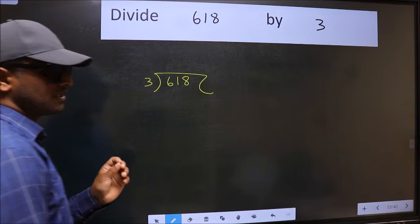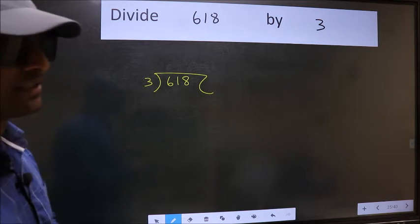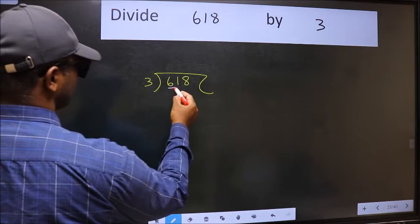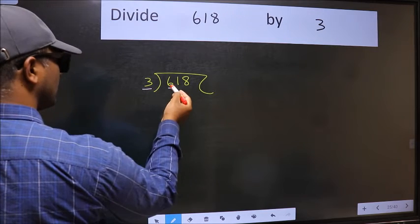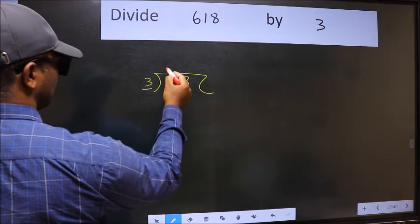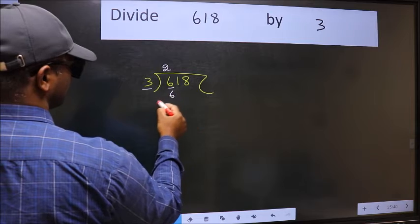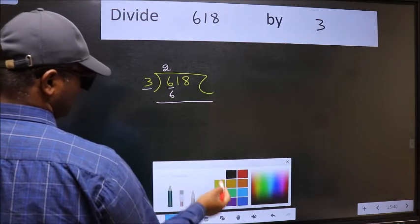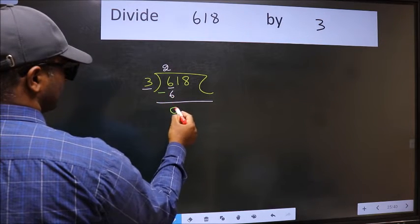This is your step 1. Next, here we have 6 and here 3. When do we get 6 in the 3 table? 3 times 2 is 6. Now we should subtract. We get 0.